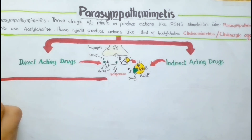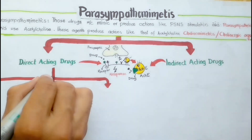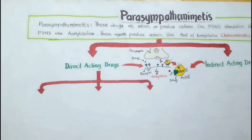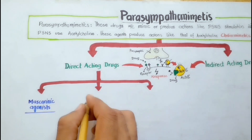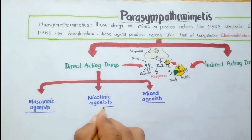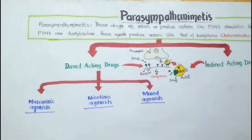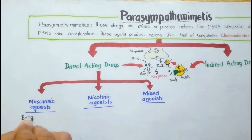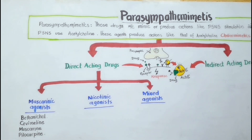The direct acting agents are further divided into muscarinic agonists, nicotinic agonists, and mixed agonists. The muscarinic agonists are those agents that bind only to muscarinic receptors and show their actions. These include bethanechol, cevimeline, muscarine, and pilocarpine. Here bethanechol and cevimeline are choline esters, while muscarine and pilocarpine are alkaloids.